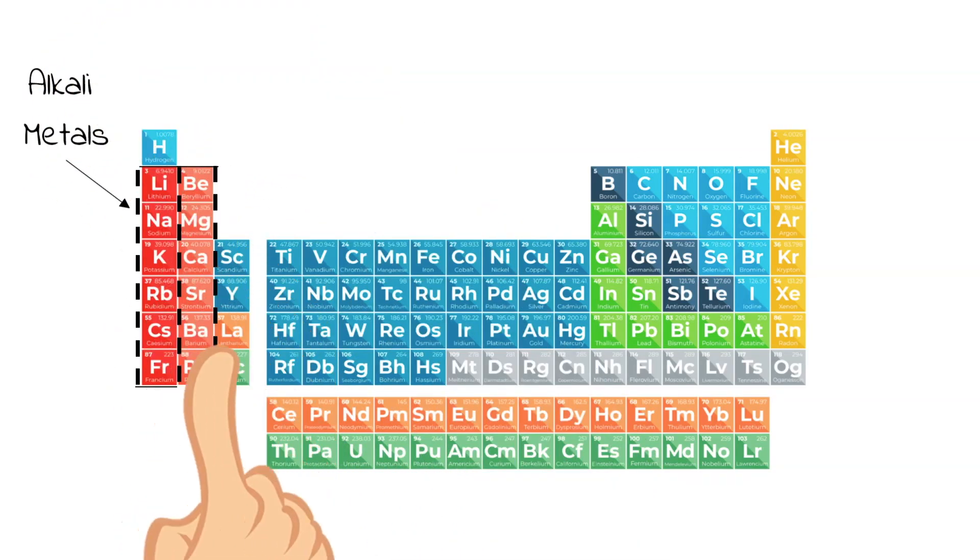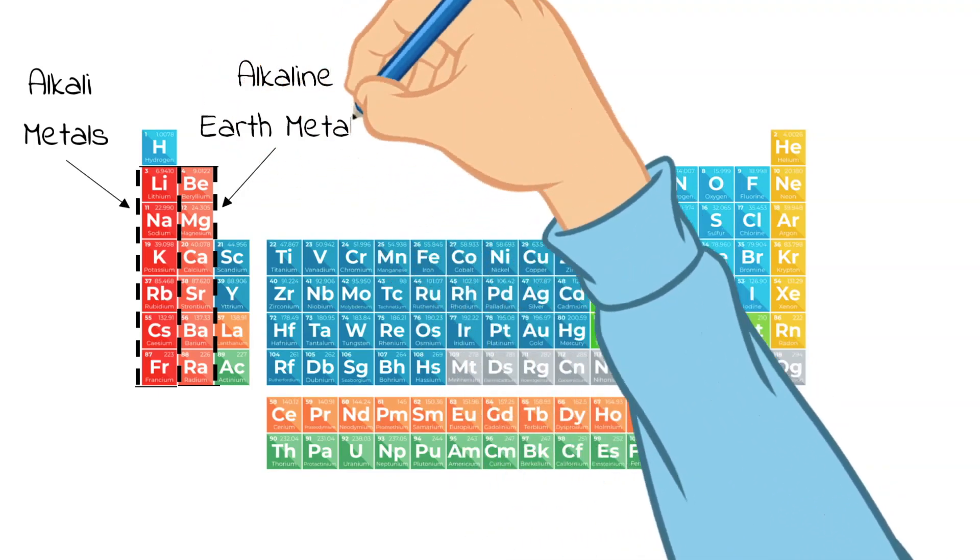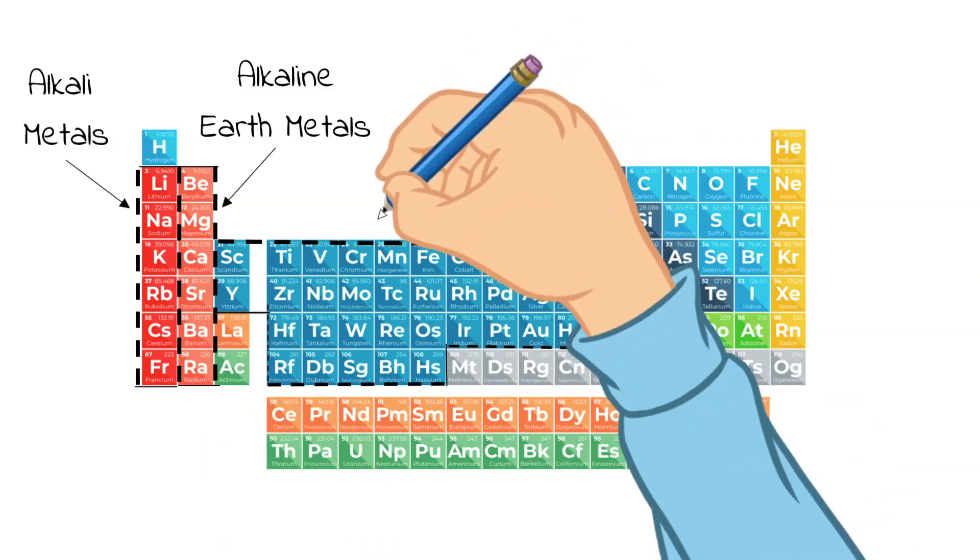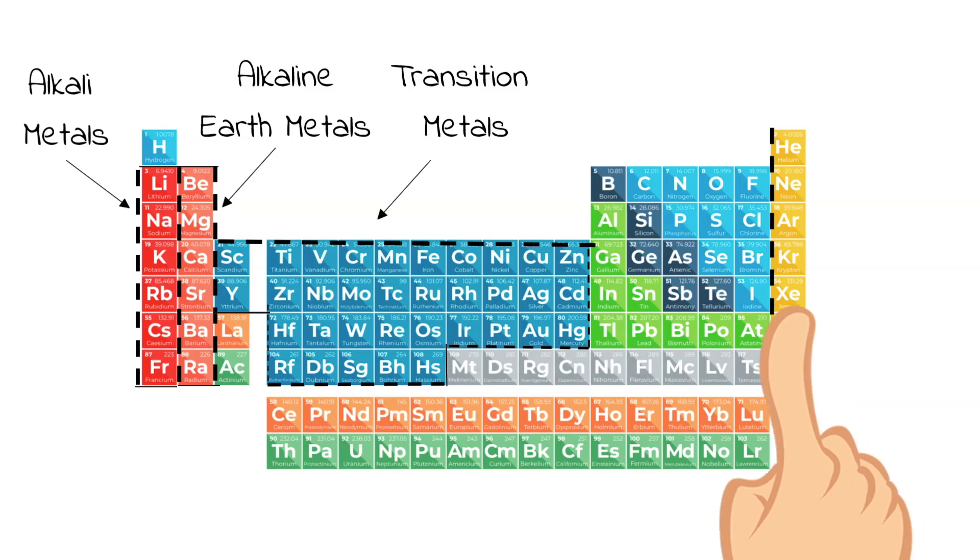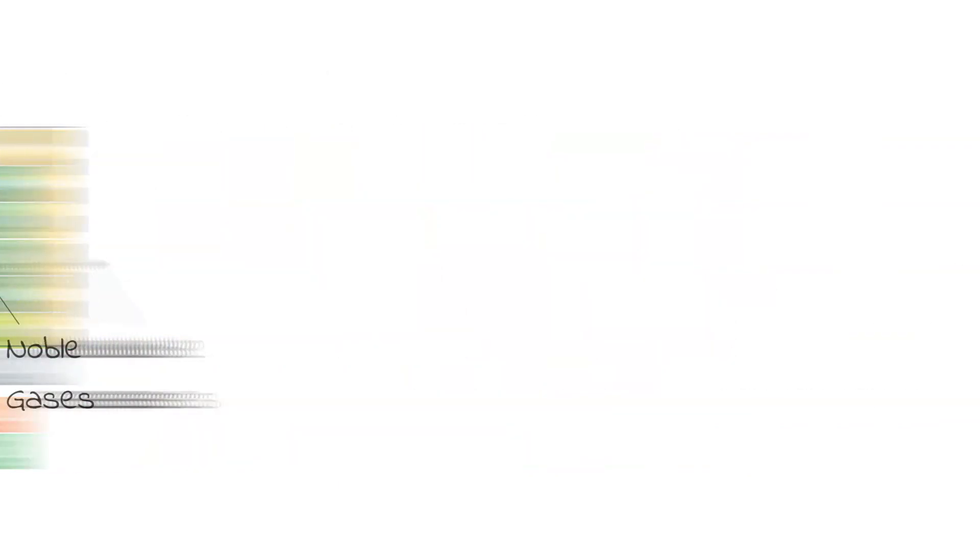Looking at the periodic table, you will notice that they are also organized into families of atoms that are alike. Some examples of families include alkali metals, alkaline earth metals, transition metals, and noble gases. These are only some of the ways and some of the groups that our periodic table is organized into.